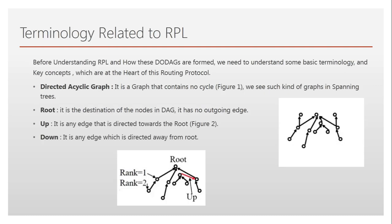In order to understand RPL fully, we need to start from basic terms. A DAG, or Directed Acyclic Graph, is a kind of spanning tree graph where we do not have any cycles. You can look at the right part of the screen — we have a graph which looks like a spanning tree, and in the spanning tree we don't see any kind of cycle.